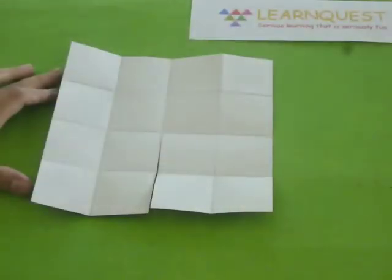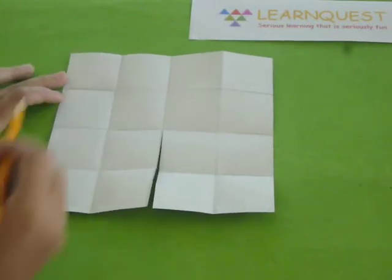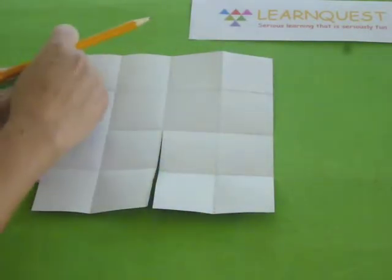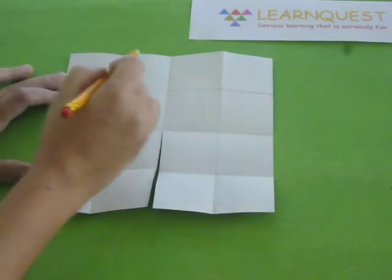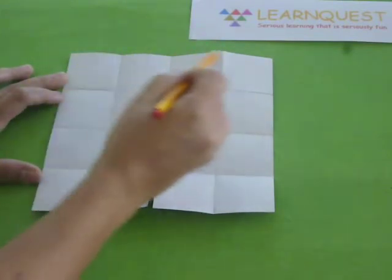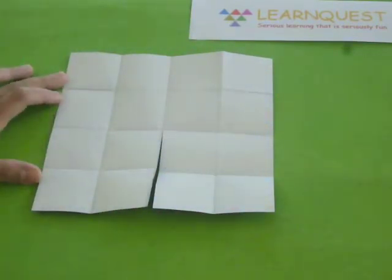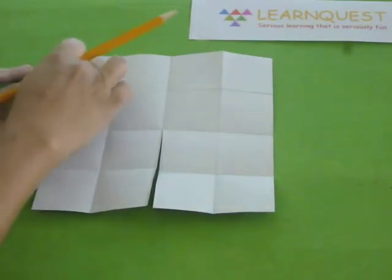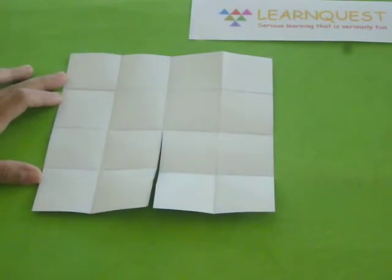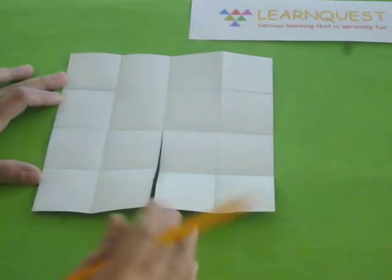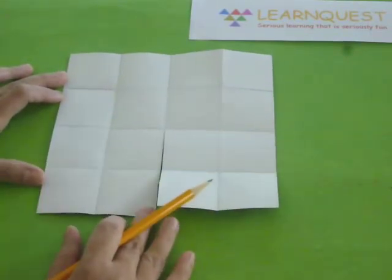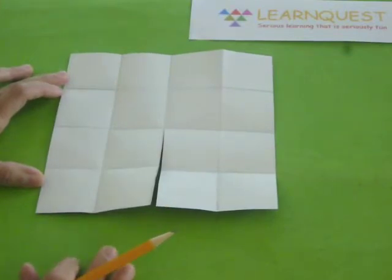Let us find the perimeter of this model. The perimeter means the border. One square, the side of one square can be taken as one unit. So the perimeter is 4, 4's are 16. What is the area? Each square will be one unit of area. So there are 4 rows of 4. So 4 4's are 16 again. So the perimeter is 16 units and the area is also 16 square units.